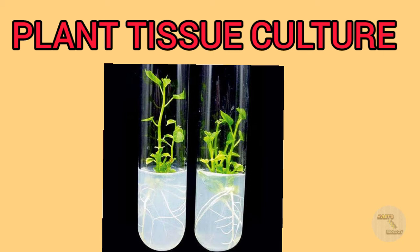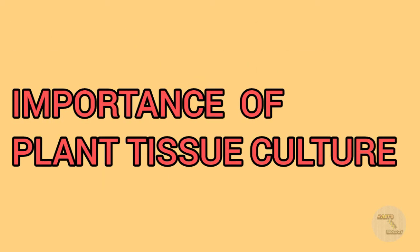The main reason behind plant tissue culture is the production of clones of plants — by this technique we can clone a plant very quickly. Plant tissue culture can also be used to conserve rare or endangered plant species. This process is also used to cross distantly related species by protoplast fusion and regeneration of novel hybrids.